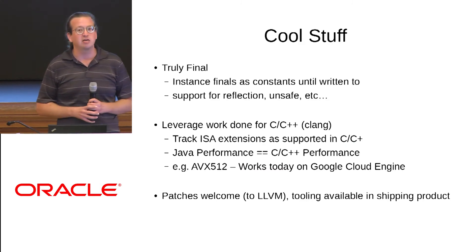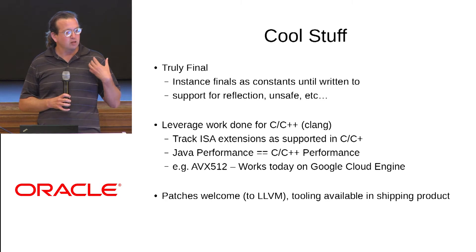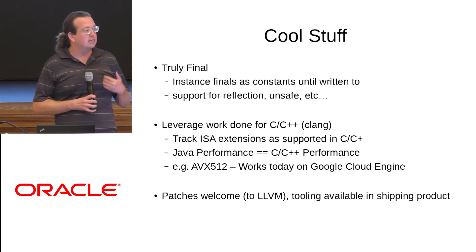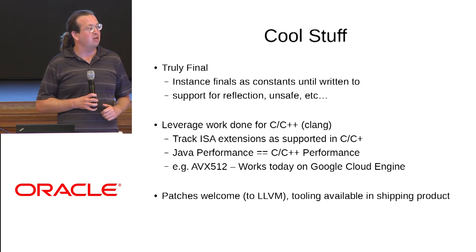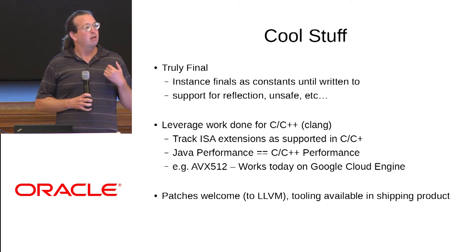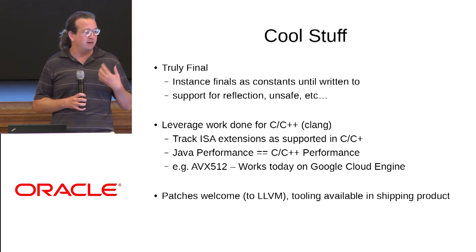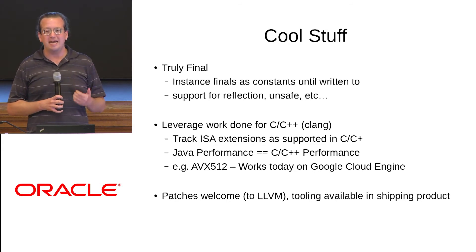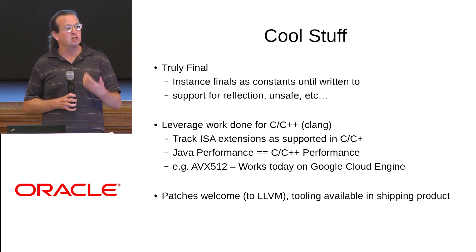I want to focus on some cool observations about the project. The first is something not directly related to the compiler but about the runtime integration — an optimization we recently implemented called TrulyFinal. Instance finals in Java are not actually final; they're written to frequently via reflection and other dirty hacks. TrulyFinal is a speculative optimization that treats an instance final as actually being a constant until it is observed being written to. We tried implementing this in C2 — that didn't work. We were able to implement it rather quickly in Falcon, and that was a proof point that the idea had worked out as we had hoped.